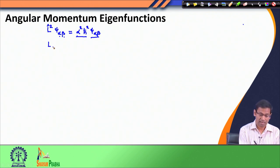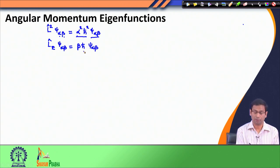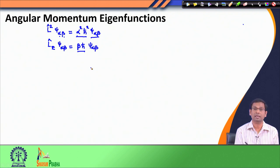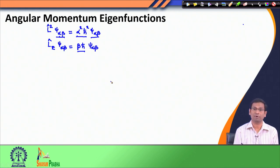Similarly, when I apply the Lz operator on ψ_αβ I get βℏψ_αβ. Again, since Lz has the dimensionality of angular momentum, which is the same as ℏ, I define the eigenvalue as βℏ so that β is a dimensionless real number. These are still definitions — I still do not know what α or β are. I am just defining ψ_αβ as a simultaneous eigenfunction of L² and Lz, with eigenvalues α²ℏ² and βℏ respectively, where α and β are yet to be determined.